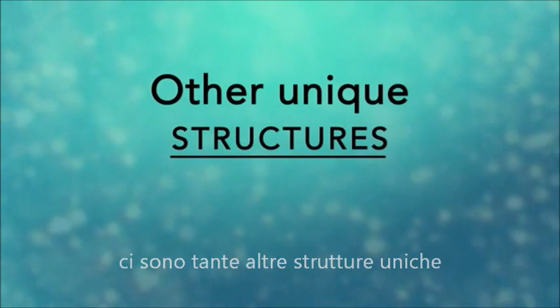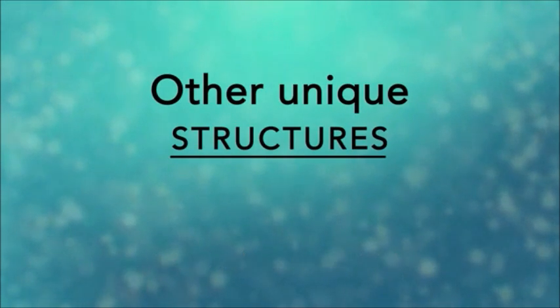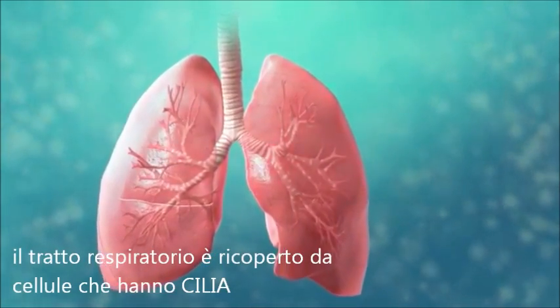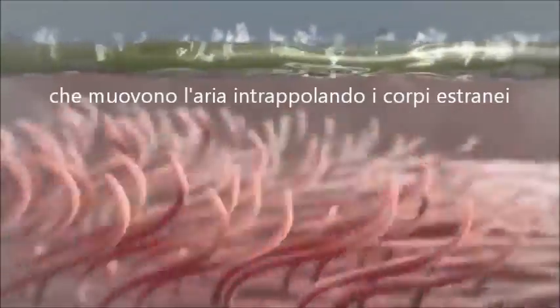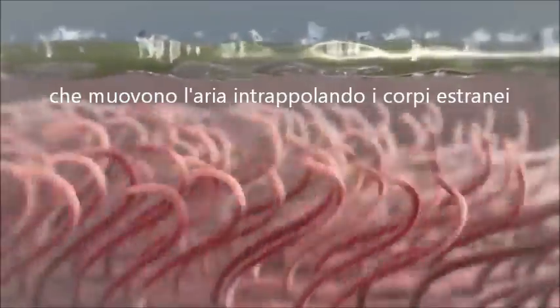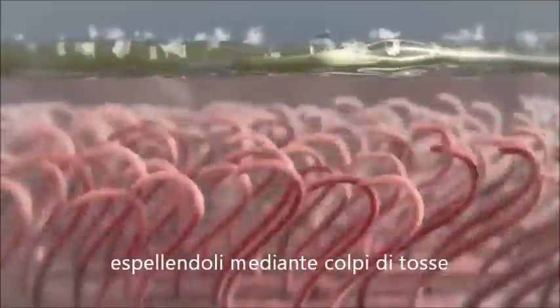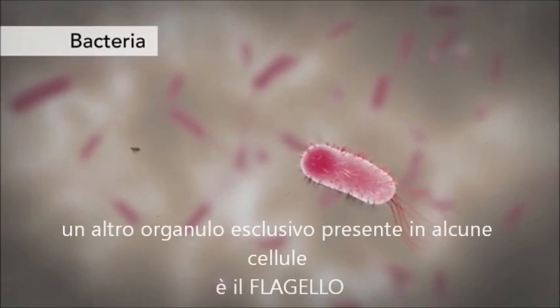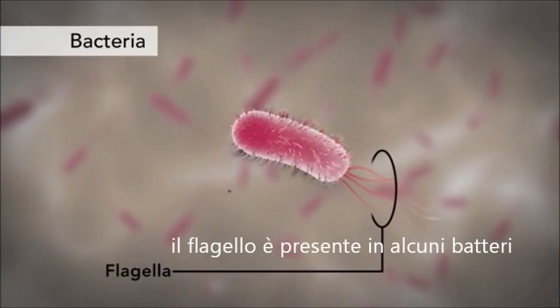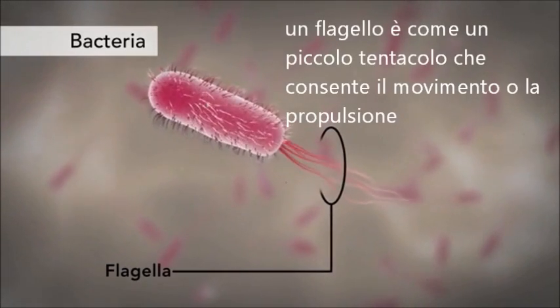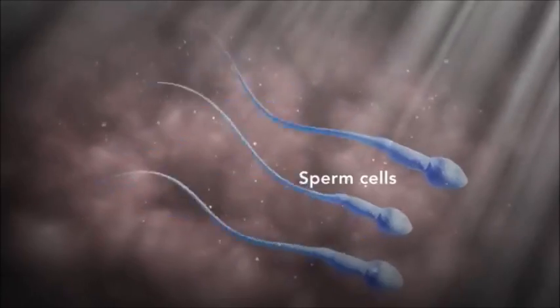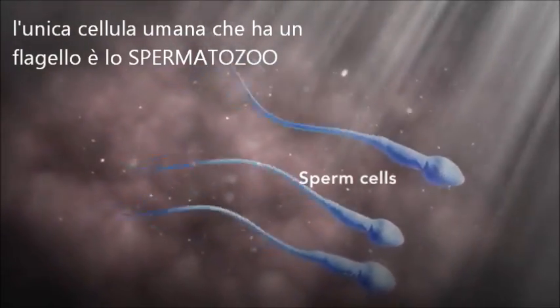There are many other unique structures that only some cells have. In humans, for example, the respiratory tract is lined with cells that have cilia. These are microscopic hair-like projections that can move in waves. This feature helps trap inhaled particles in the air and expels them when you cough. Another unique feature in some cells is flagella. Some bacteria have flagella. A flagellum is like a little tail that can help a cell move or propel itself. The only human cell that has a flagellum is a sperm cell.